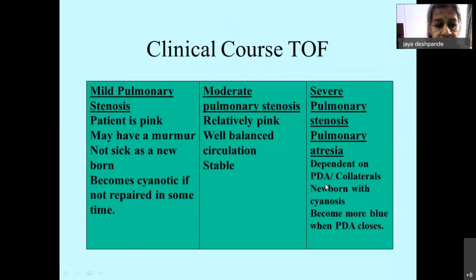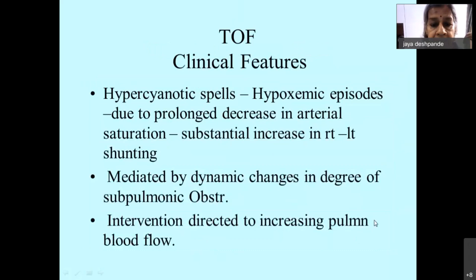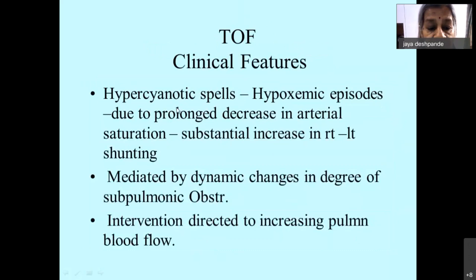Clinically, mild pulmonary stenosis patients are pink in the newborn state but tend to become cyanotic if repair is not done. Moderate pulmonary stenosis gives a relatively pink baby with a well-balanced circulation. With severe pulmonary stenosis or pulmonary atresia, most newborns have cyanosis and definitely become blue when the PDA closes. Hypercyanotic spells related to hypoxemia are a classical feature of Fallot's tetralogy due to prolonged decreased arterial saturation, and all interventions are directed at increasing pulmonary blood flow.